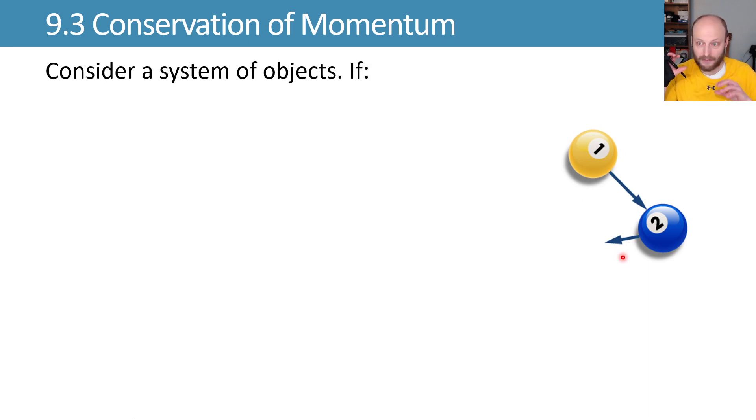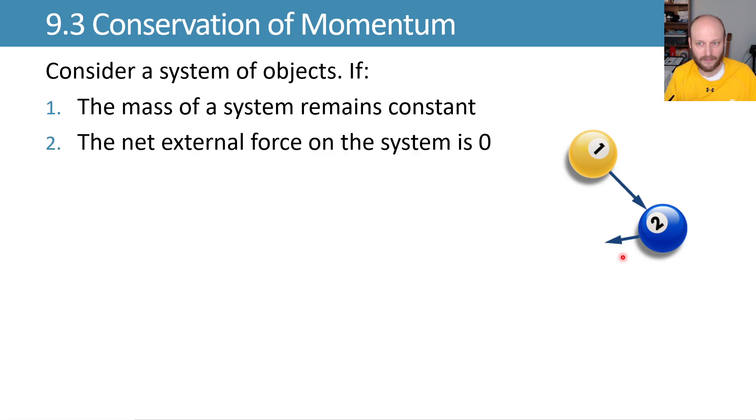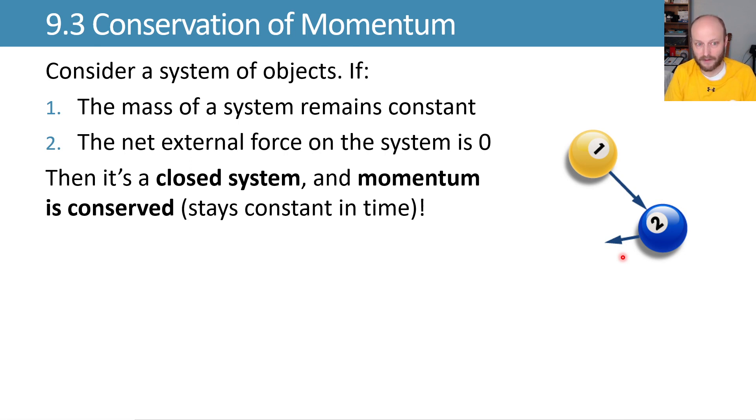If we take these balls and the mass of our combination of these balls remains constant, which is likely to do, and the net external force on the system is zero, then we have a closed system and our momentum is conserved, which means it stays constant in time.